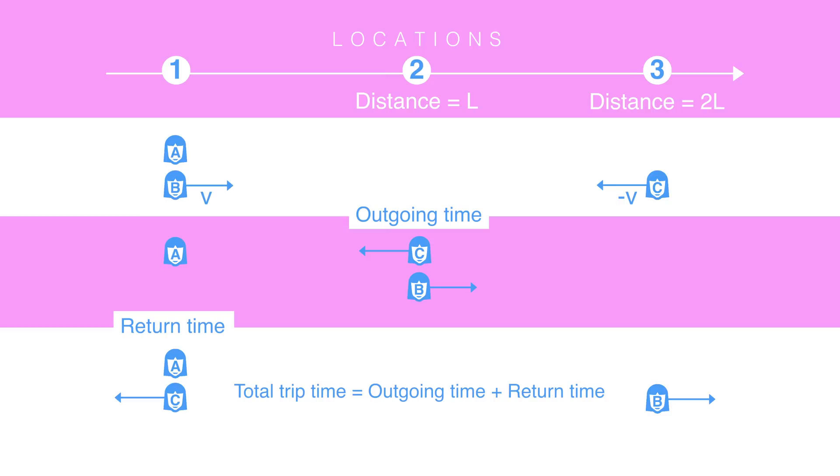So let's define three events, which we'll number with Roman numerals. Event one is when they start. Event two is when observers B and C pass at the center. And event three is when observer C passes location one.